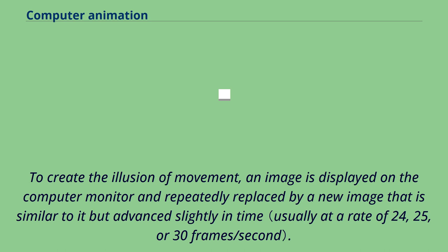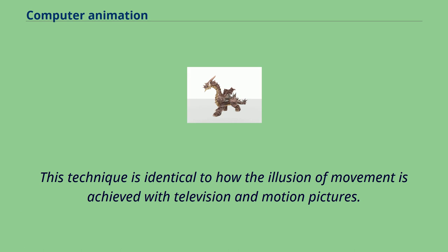To create the illusion of movement, an image is displayed on the computer monitor and repeatedly replaced by a new image that is similar to it but advanced slightly in time. This technique is identical to how the illusion of movement is achieved with television and motion pictures.